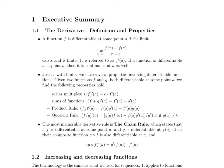One is the limit definition of the derivative. We say that a function f is differentiable at some point a if the limit as x approaches a of f of x minus f of a over x minus a exists and is finite. It's referred to as f prime, and in particular, it's notable that if a function is differentiable at a point a, then it is continuous at a as well.